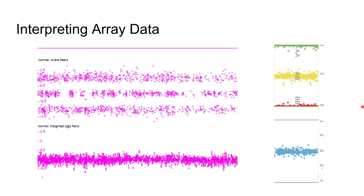SNP arrays display three allelic tracks representing homozygous AA, homozygous BB, and heterozygous AB — it is normal to have three tracks. When analyzing SNP arrays, the first step is to look at the log2 ratio and verify that the overall genome reading hovers around zero or normal. Just like in aCGH arrays, deviations upwards are likely amplifications or insertions, and deviations downwards are deletions. The second step is to look at the allelic tracks and identify any SNP abnormalities. This example is normal.